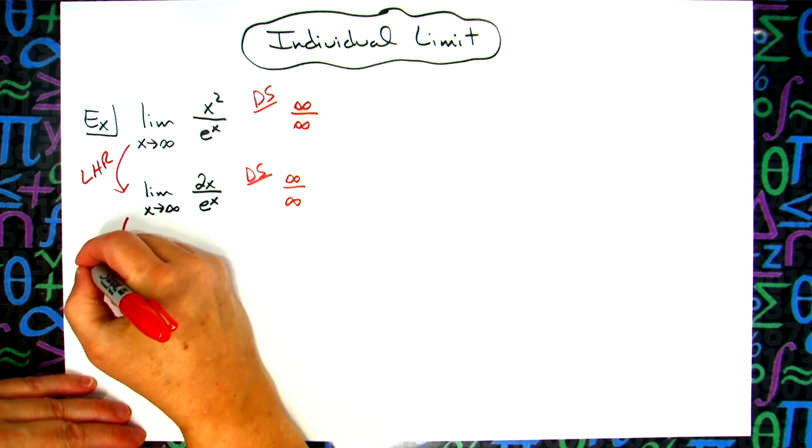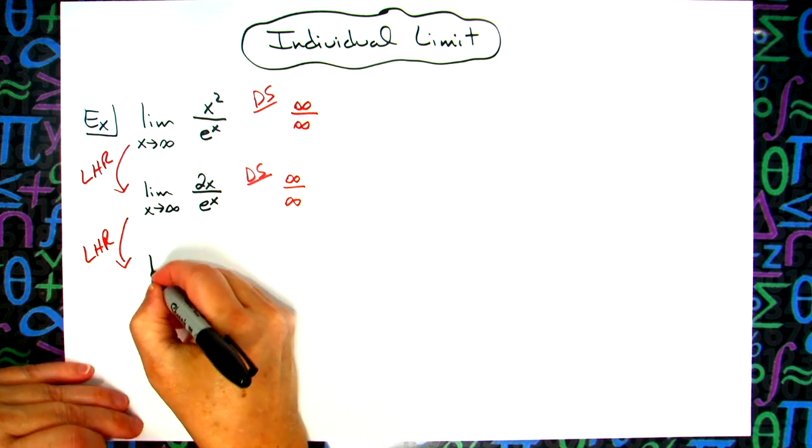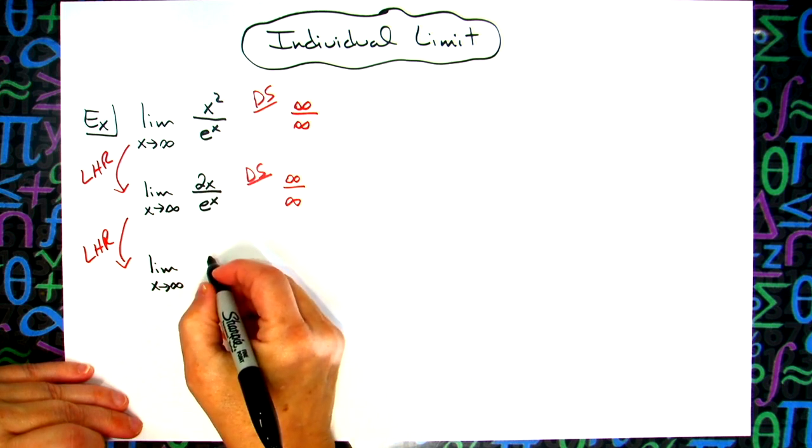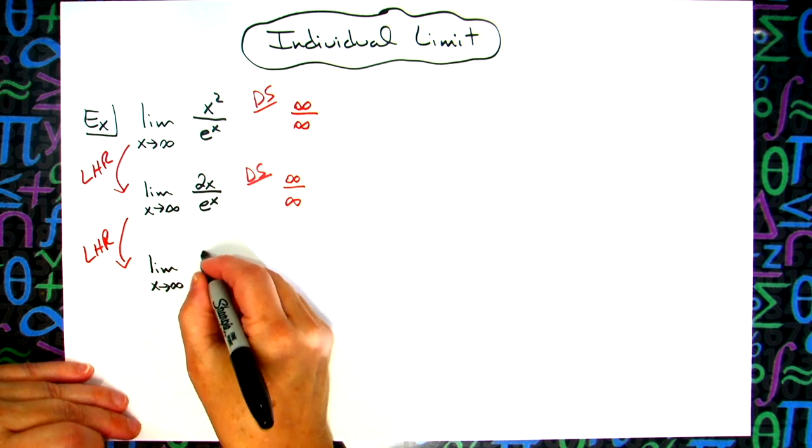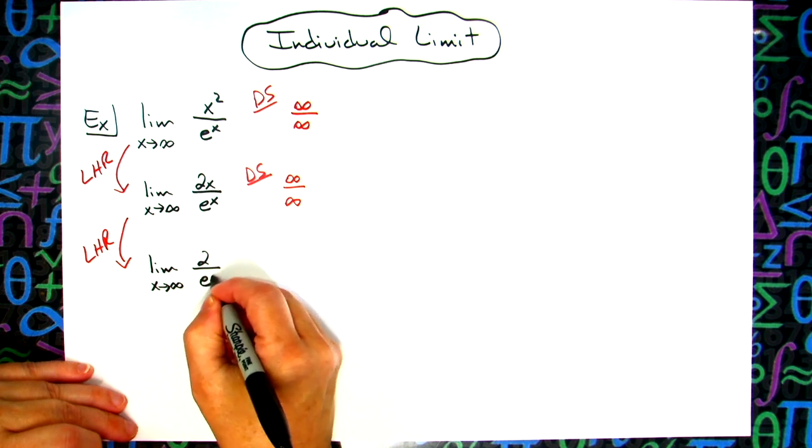So we apply L'Hopital's rule again. The limit as x approaches infinity - taking the derivative of the top, we have 2. Taking the derivative of the bottom, we have e^x.